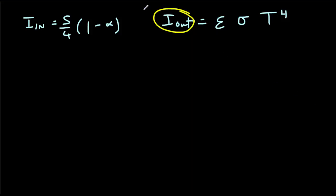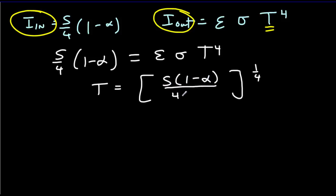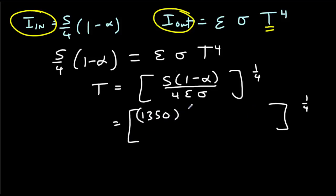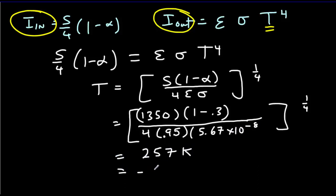All we need to do is equate our output to our input and solve for T. Rearranging and solving for T, we get T equals the quantity S times (1 minus the albedo), all divided by 4 times the emissivity times the Stefan-Boltzmann constant, raised to the quarter power. Putting in our numbers — S = 1350 W/m², albedo = 0.3, emissivity = 0.95, Stefan-Boltzmann constant = 5.67×10⁻⁸ — you should get an answer of 257 Kelvin, or negative 16 degrees Celsius.